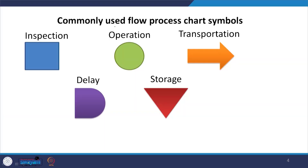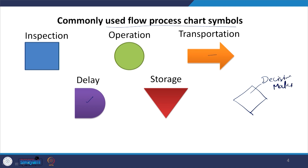That type of information from the worker-machine chart tells you how much time the machine is busy and how much time the worker is busy. The commonly used symbols in process charts are: circle for inspection, a different symbol for operation, arrow for transportation, a reverse-D for delay, and a triangle for storage. One more symbol like a star type is for decision making.